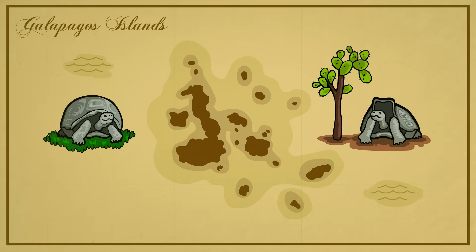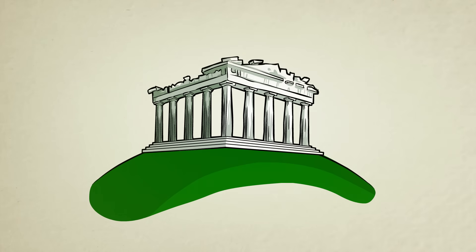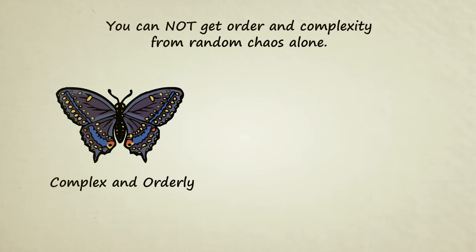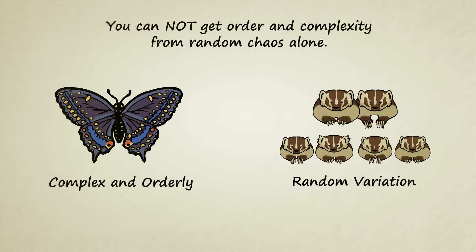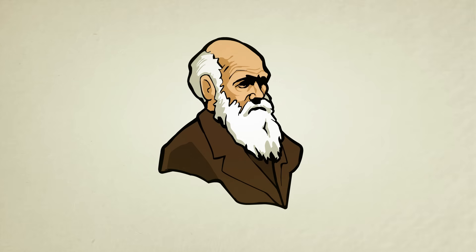Because the evidence for common descent is so overwhelming, the concept has been around since ancient times. In the past, however, it was rejected by many philosophers and scientists for one main reason: the bodies and behaviors of living things are extremely complex and orderly, and descent with modification simply produces random variation. No one could explain how complex life arose from simple life through random variation until Charles Darwin discovered natural selection.